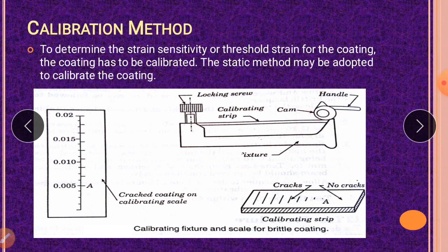The lacquer should be scraped from the calibrating strip at the end which is to be clamped in the loading fixture and the point of contact with the cam. This is the cam where the contact occurs. When clamping the strip in the calibrating fixture, the locking screw should be tightened until the strip just touches the bottom of the loading cam to ensure the consistency of strain between the calibrating fixture and the calibrating scale.